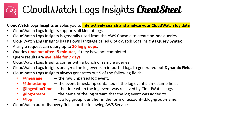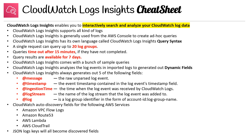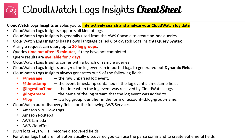CloudWatch can auto-discover fields for the following services: VPC flow logs, Route 53, Lambda, and CloudTrail. For JSON logs, all the fields will become discoverable — really great for CloudTrail events. For other logs that are not discovered automatically, you can use the parse command to create ephemeral fields. So there you go.